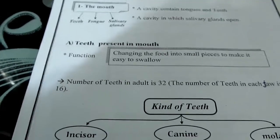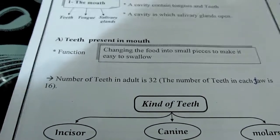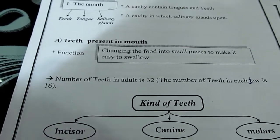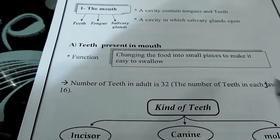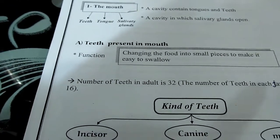Okay. Number of teeth in adults is 32. The number of teeth in adults is 32, with 16 in each jaw.